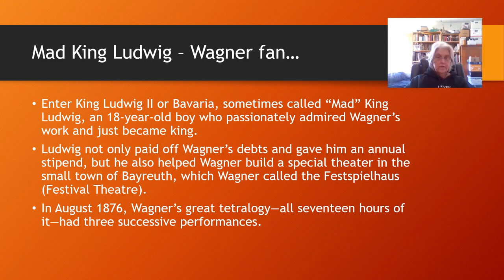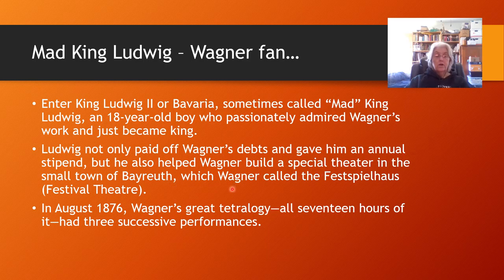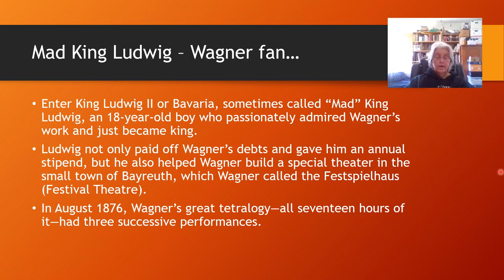Wagner had gotten into bad debt. Here we have King Ludwig II of Bavaria, sometimes called Mad King Ludwig. He was just 18 but loved Wagner and had just become king. He paid off Wagner's debts, gave him an annual stipend, and helped Wagner build a special theatre in the small town of Bayreuth, which Wagner called the Festival Theatre, designed by him in order to produce the Ring Cycle operas. The Ring Cycle takes 17 hours to perform all four operas, and thanks to Mad King Ludwig, we have this fantastic theatre in Bayreuth. If you want to spend 17 hours listening to opera, you can go there and see it all at once.